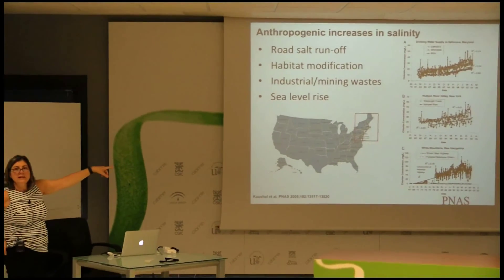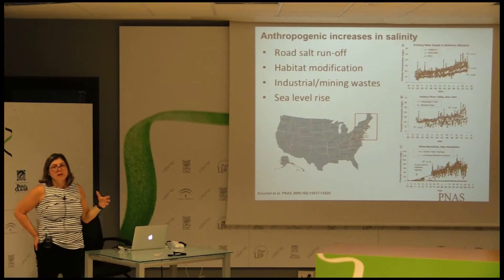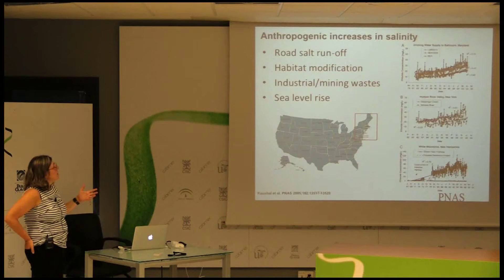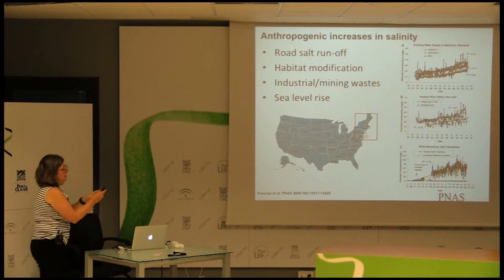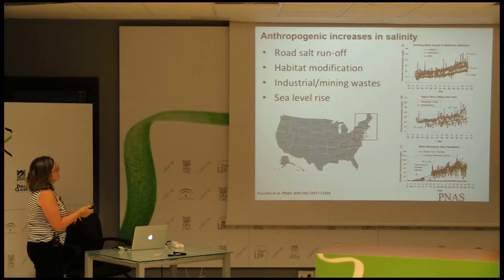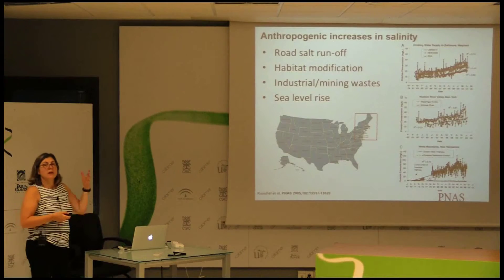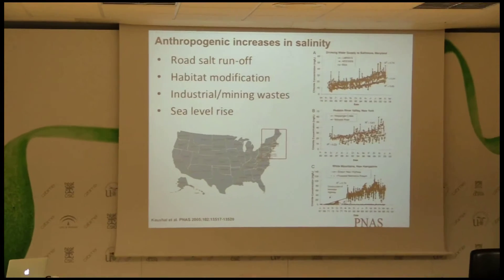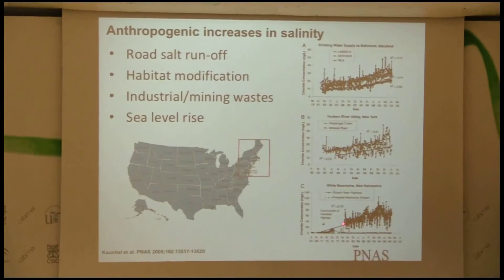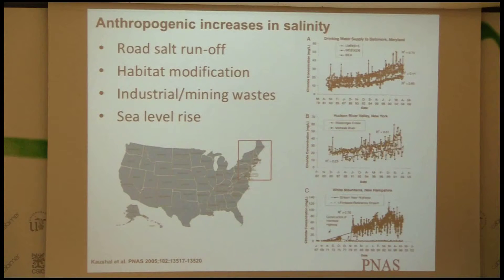These data are from the northeast in the US, focusing on a general increase in salt. These are chloride levels specifically on the y-axis — from Baltimore, the Hudson Valley, and the White Mountains. So from somewhere more populated to somewhere not populated with people, we see increasing years of chloride concentrations in freshwater systems due to multiple inputs, but primarily road salt application is important here.